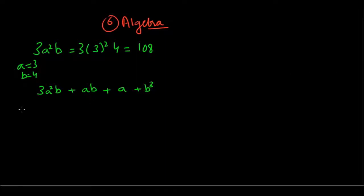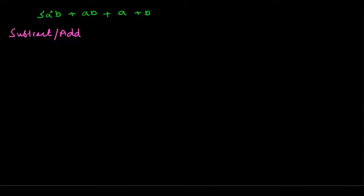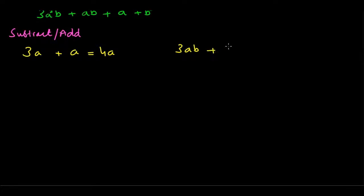Let's look at how we can add and subtract algebraic expressions. If I have 3a plus a, that's a simple addition — I have 3 a's and I'm adding 1a, so I get 4a. Similarly, if I have 3ab and I add 5ab, they are like terms, so I just add the coefficients — 3 and 5 — to get 8ab.